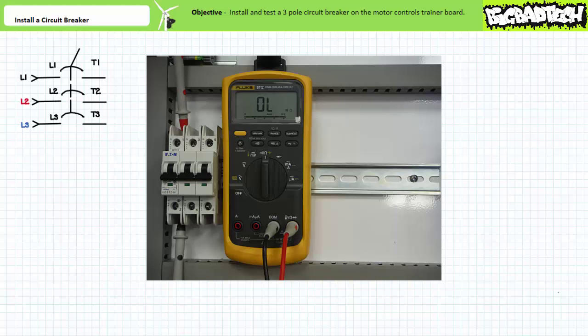Recall we left our base motor controls trainer board as empty as your lab partner's head. Let's spruce things up a bit by adding a reusable circuit protection device. I am referring to a circuit breaker, a reusable circuit protection device that protects circuits from unusually high current events associated with short circuits by opening up like a switch and stopping current flow.